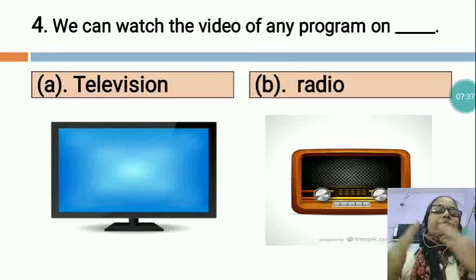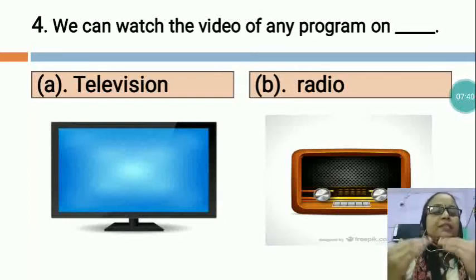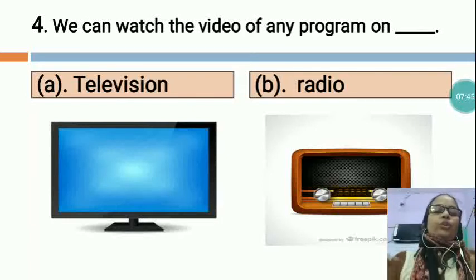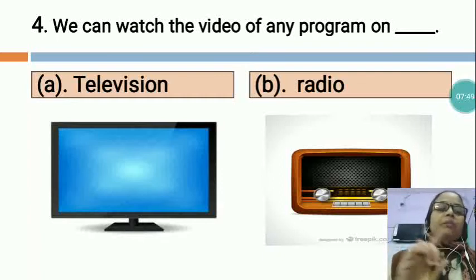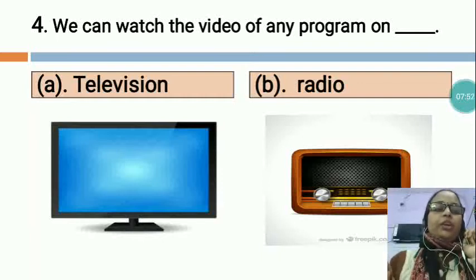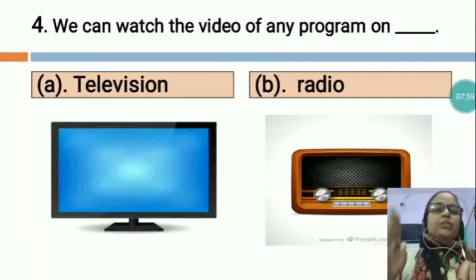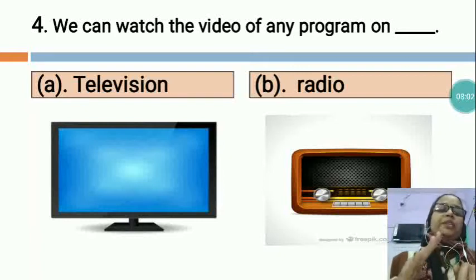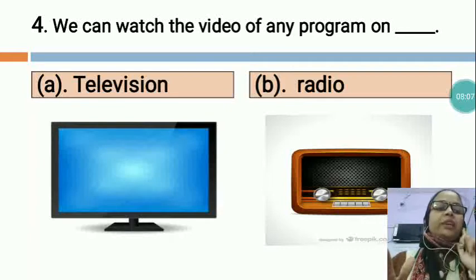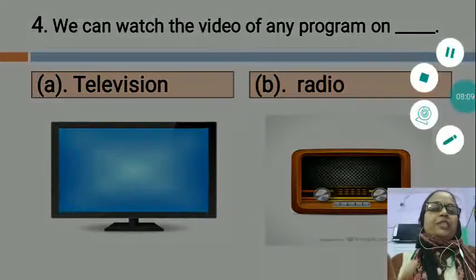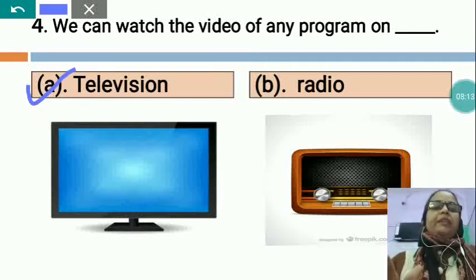With the help of television, you can see any program's video and also listen to audio. But on radio, you are not able to see the video — you can listen to audio only. Both are means of communication, but the difference is that with television you can see video and audio, while with radio you can only listen to audio. So the correct option is A, television.